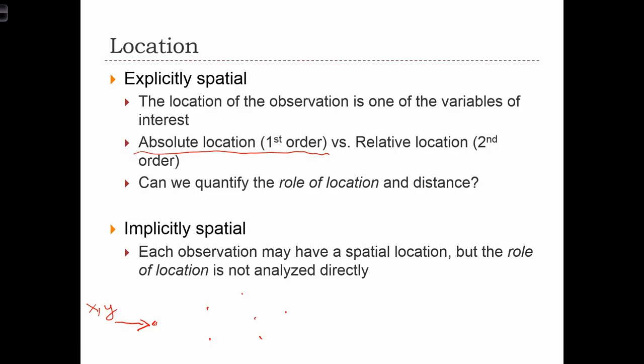And we're going to contrast that with relative location, or second-order location. In relative location data, we are storing the locations of our observations with respect to locations of some other feature in the environment. So in this case, we might be storing for each waterfall not the absolute location of the waterfall, but perhaps we want to know how far away is this waterfall from a highway.